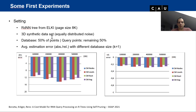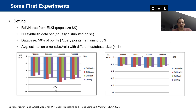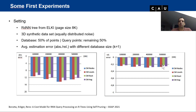We also ran experiments with uniformly distributed noise — no clusters — using the same settings. With increasing database size, results are quite stable and much better in relative error terms. Interestingly, the simple root-only variant is the best here, likely because all k-NN distances are roughly equal in uniform data, making the maximum aggregation a good representative.